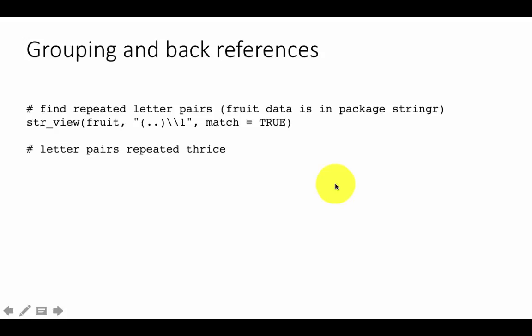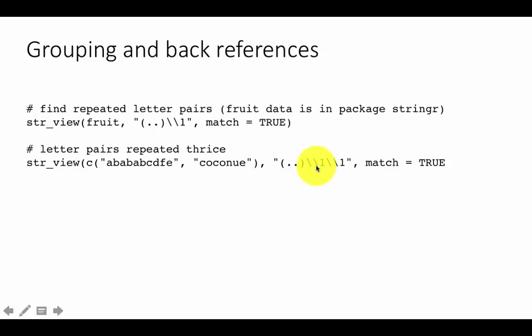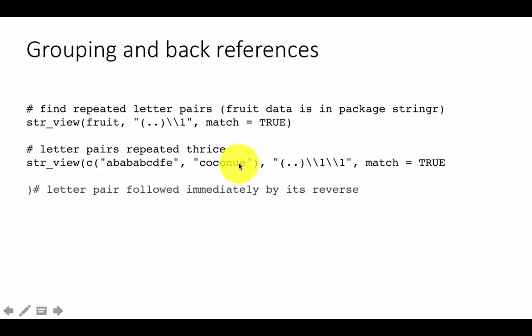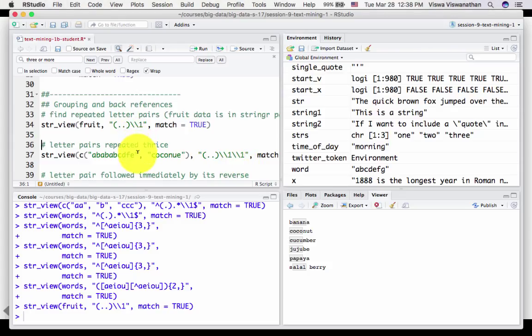So letter pairs repeated three times. Here we are looking at letter pairs repeated twice; three times is just an extension of the same thing. We just say backslash backslash one, referring to the group, and then refer to it again — so match some letter pair, and then look for the same thing to occur, and the same thing to occur again. I created 'ABABAB', which is three repetitions, so that matches. Whereas 'COCONUE' doesn't match. If you run it, you'll see it matches only the first. Because we said match equals true, it doesn't even show the second one.